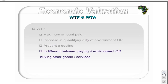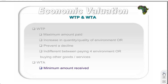At this price, the individual is indifferent between paying the money and improving or maintaining the environmental quality or quantity, or spending the money on other goods. Willingness to accept, on the other hand, is the minimum amount that an individual would be willing to receive in order to accept a decrease in the quantity or quality of the good or service.